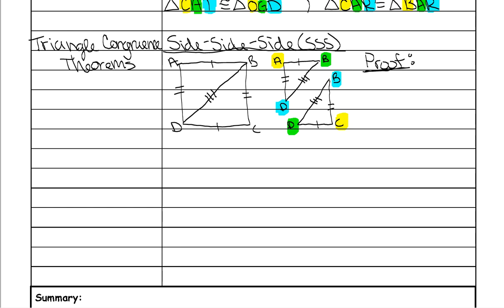For this proof, you just write all the segments that are congruent to each other. Start with the one tick mark: segment A-B is congruent to segment C-D. For the two tick mark side, segment A-D is congruent to segment C-B. For the three tick mark side, segment B-D is congruent to segment D-B. That is the proof that those triangles are congruent by side-side-side.